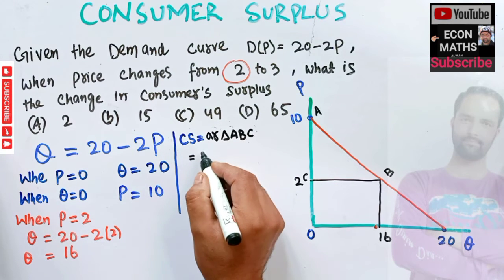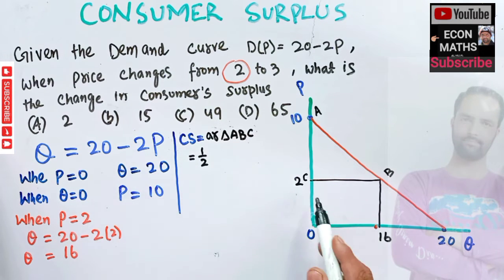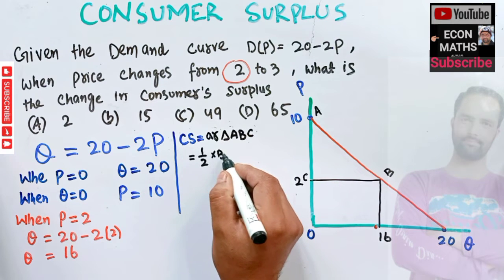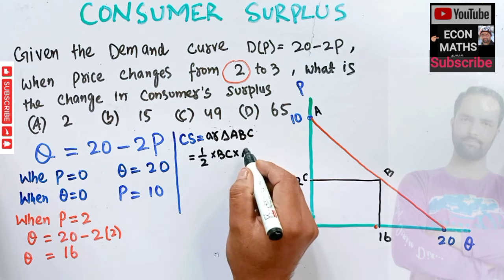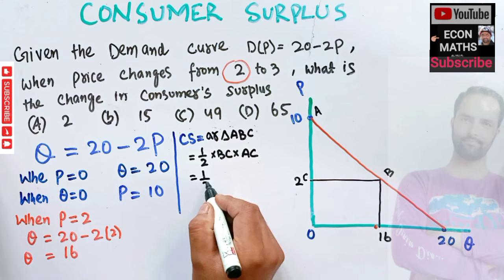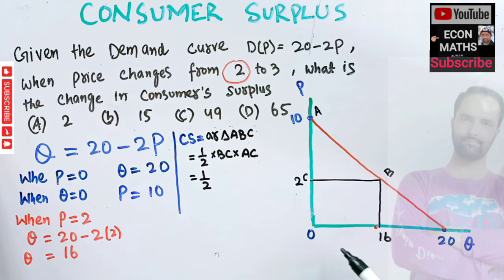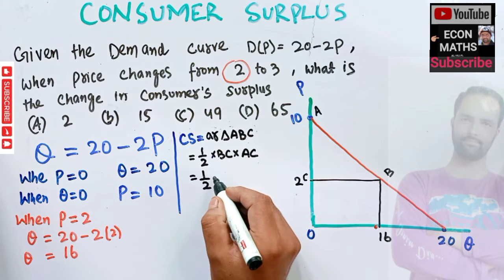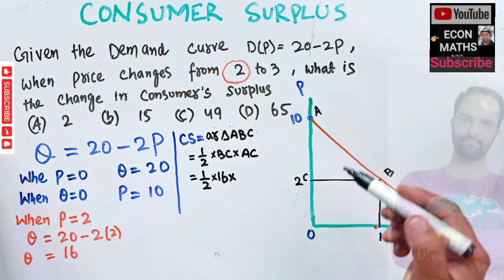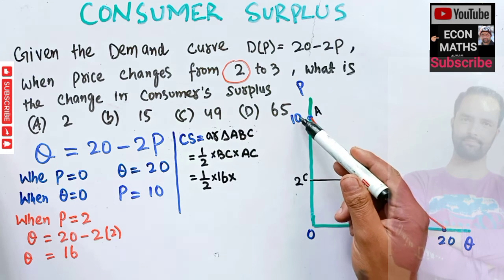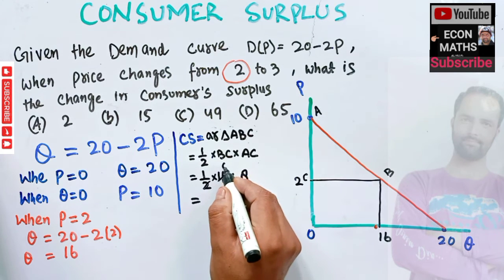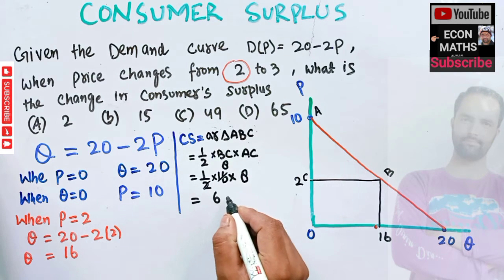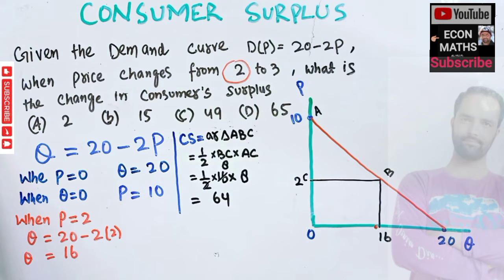Since it is a right-angled triangle, its area is one half times base times height. The base BC is the quantity, which is 16 minus 0 = 16. The height AC is the price difference, 10 minus 2 = 8. So the area is one half times 16 times 8 = 64. The original consumer surplus is 64.